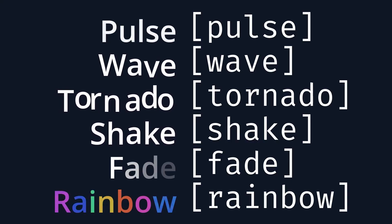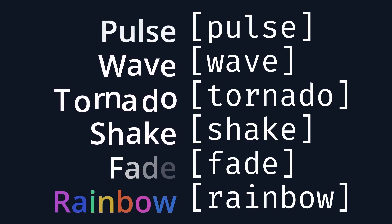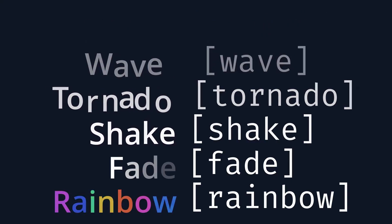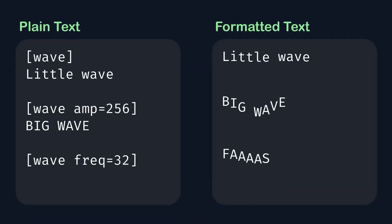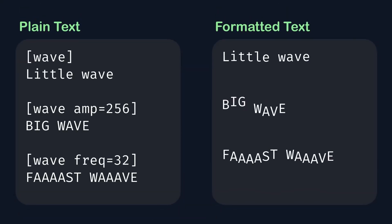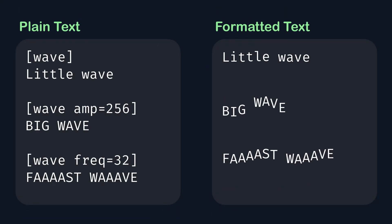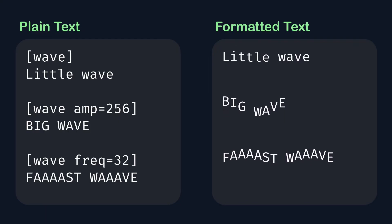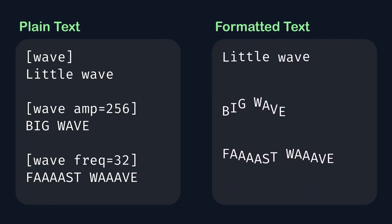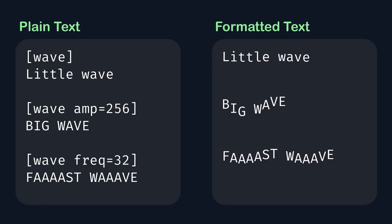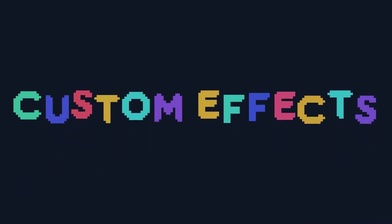Now let's get to the fun effects. Godot has a few built-in ones just to show you what the engine can do: Pulse, Wave, Tornado, Shake, Fade, and Rainbow. Along with all of these effects are customizable options. For example, with the wave effect you could change how much each character moves up and down by changing the amplitude, and how quickly the wave passes through by changing the frequency. All of these built-in effects are actually quite easy to make yourself, but to do that we need to get into custom effects!